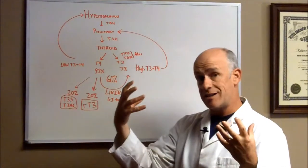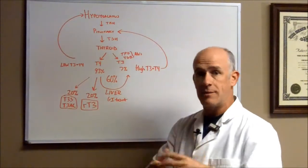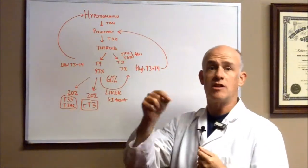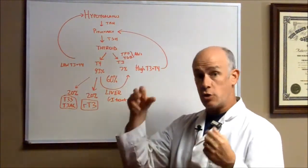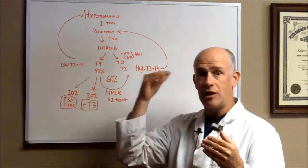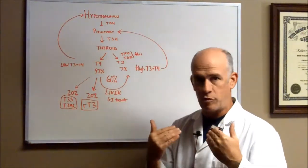Your pituitary senses that and says okay, we need some energy. So the pituitary kicks out its hormone, TSH, thyroid-stimulating hormone. So thyroid-stimulating hormone, your TSH comes from your pituitary, a gland in your brain. It doesn't come from your thyroid.